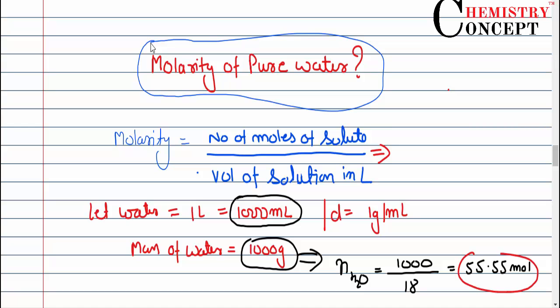That's 55.55 moles divided by the volume of the solution in liters, which is 1 liter as we assumed. So the molarity comes out to be 55.55 moles per liter.